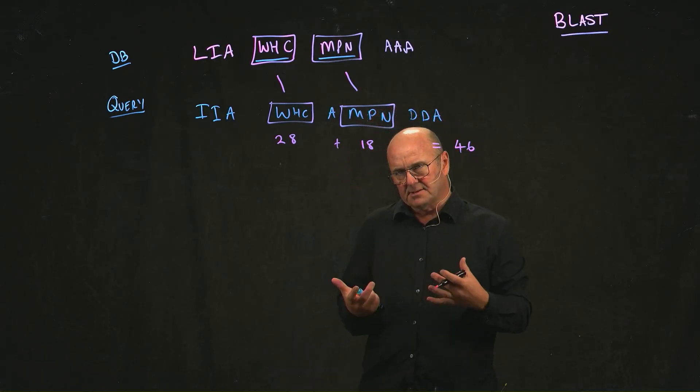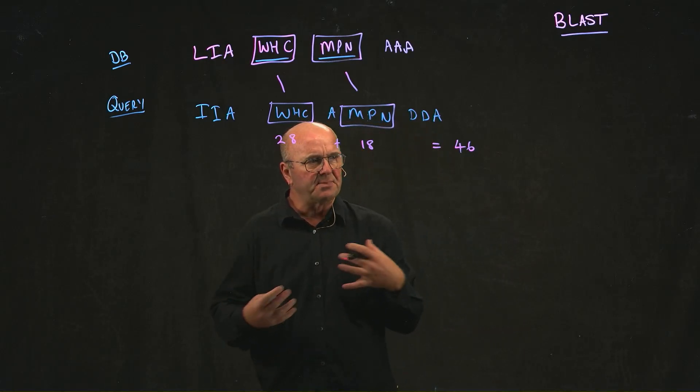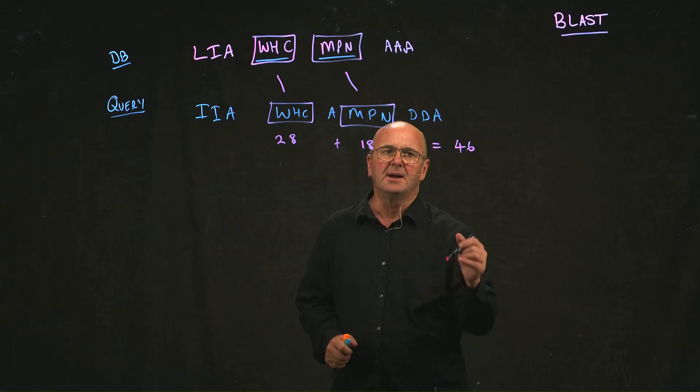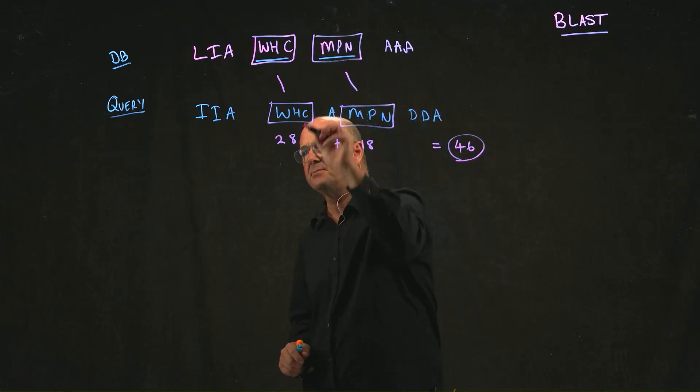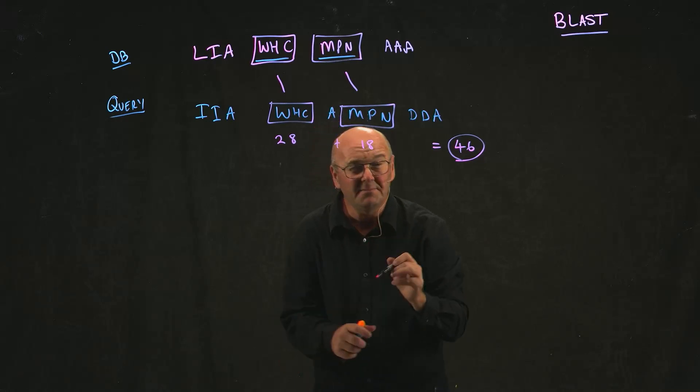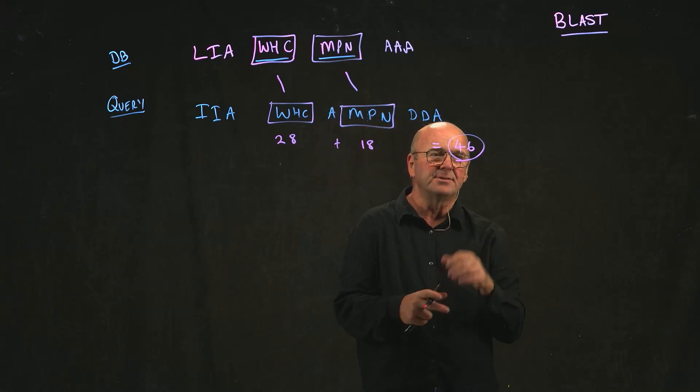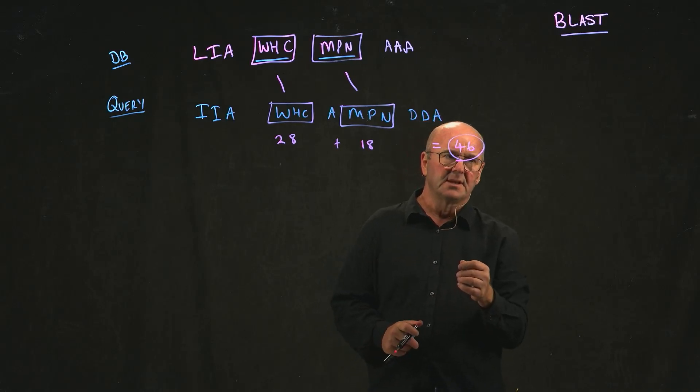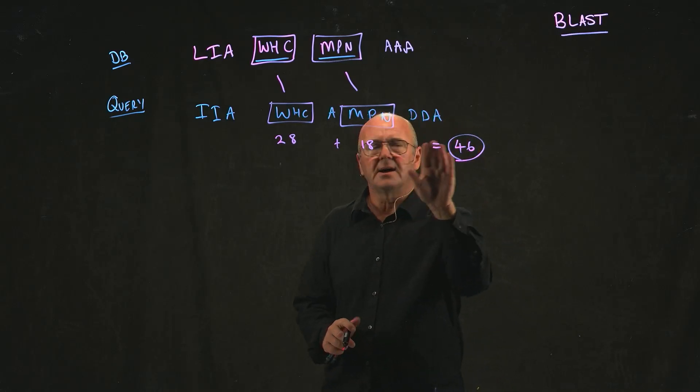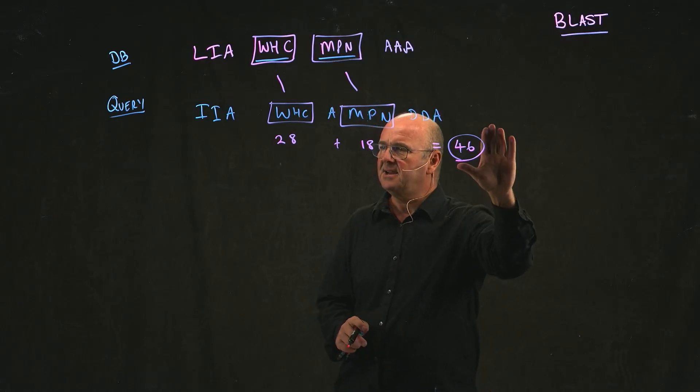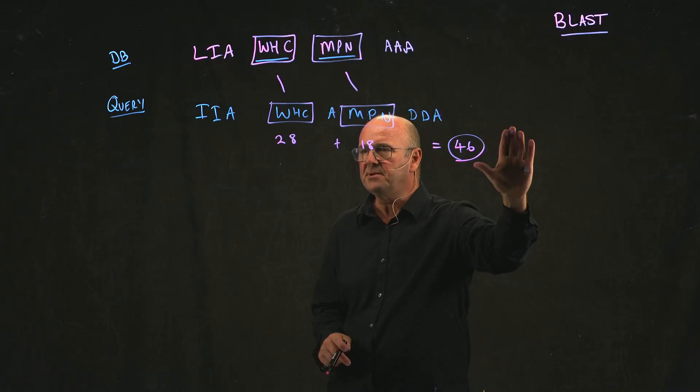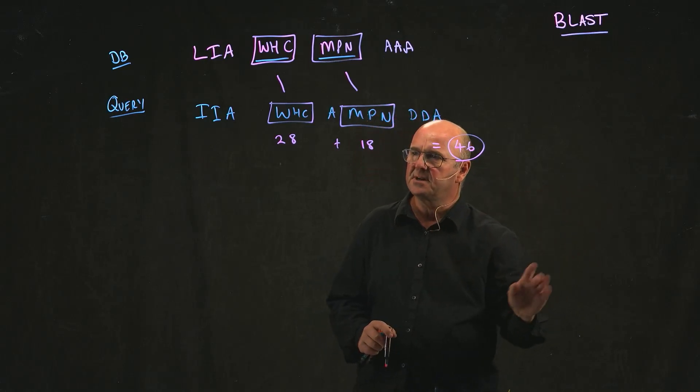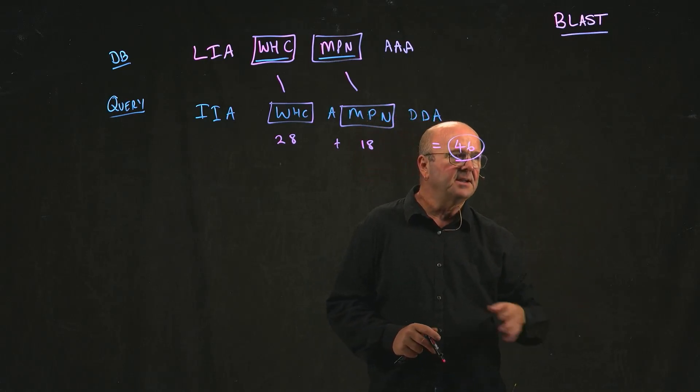And my WHC scored 28 and my MPN scored 18, which gives me an initial score of 46. Now, I'm not saying what 46 is, whether that's good or bad. That's just my initial score. But one of the filters that you can apply is on this initial score, which is just based on word matching. And word matching is really easy. You can do that really fast in computer science. And so I've got a score. I can apply a threshold and say, hey, I think that this is going to be important. I should keep it. Or I think that this is just by chance. It's just a bit of junk. The score is not really that high. I'm going to throw it away.